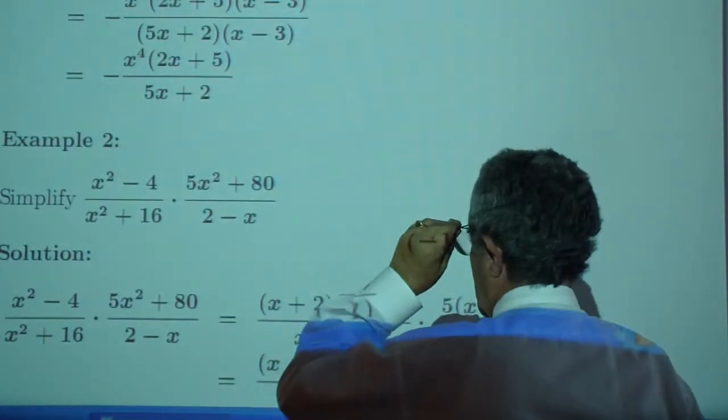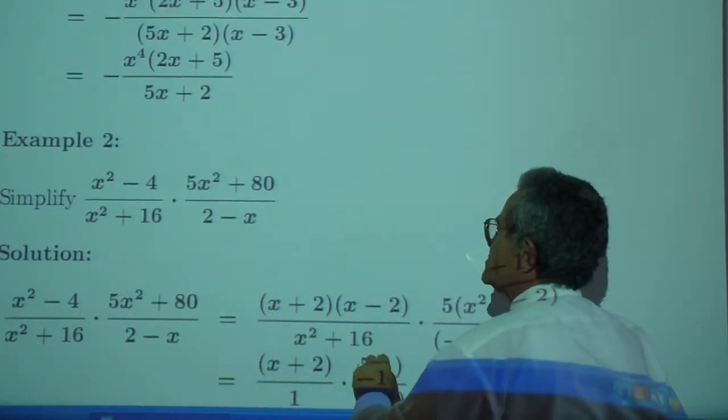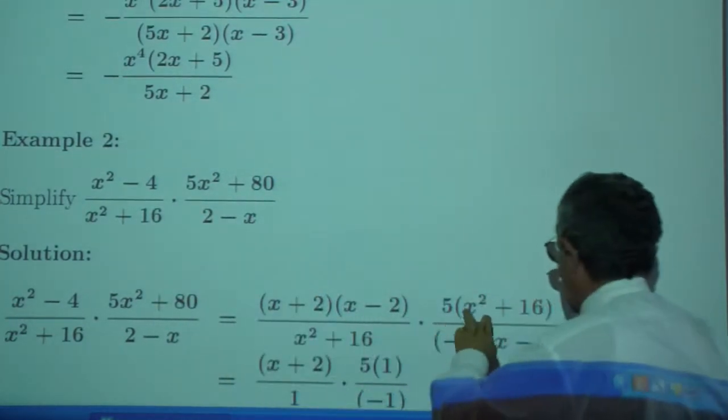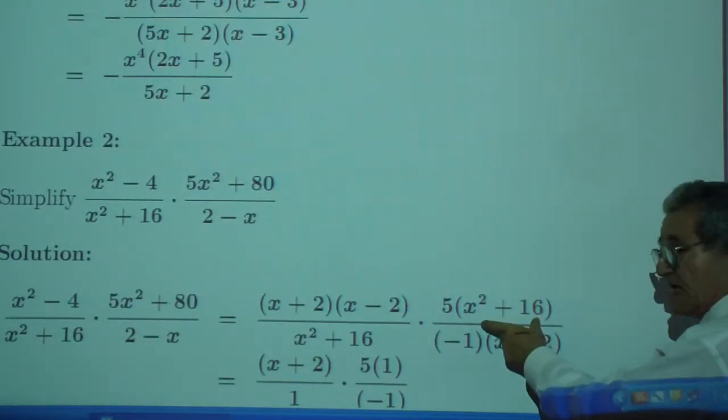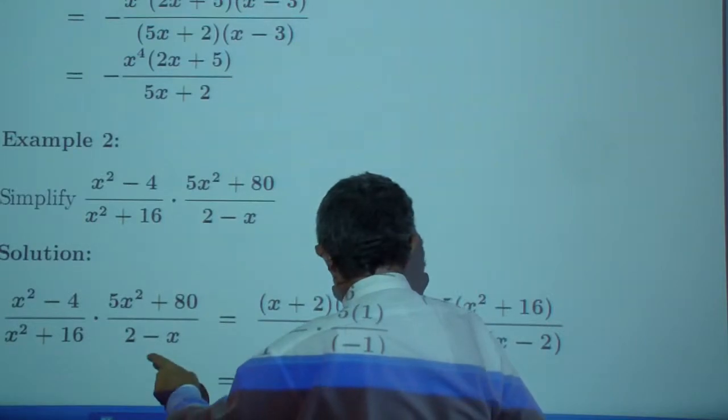Example 2. You have a difference of two squares, x plus 2 times x minus 2. You can factor out the 5. You get x squared plus 16. The sum cannot be squared in general. You have x squared plus 16.